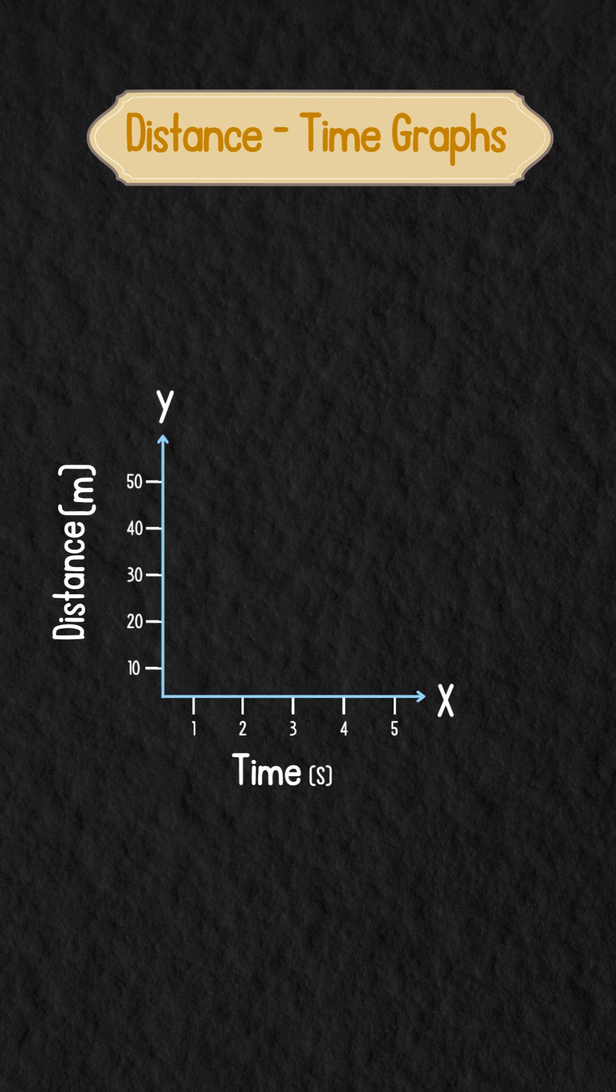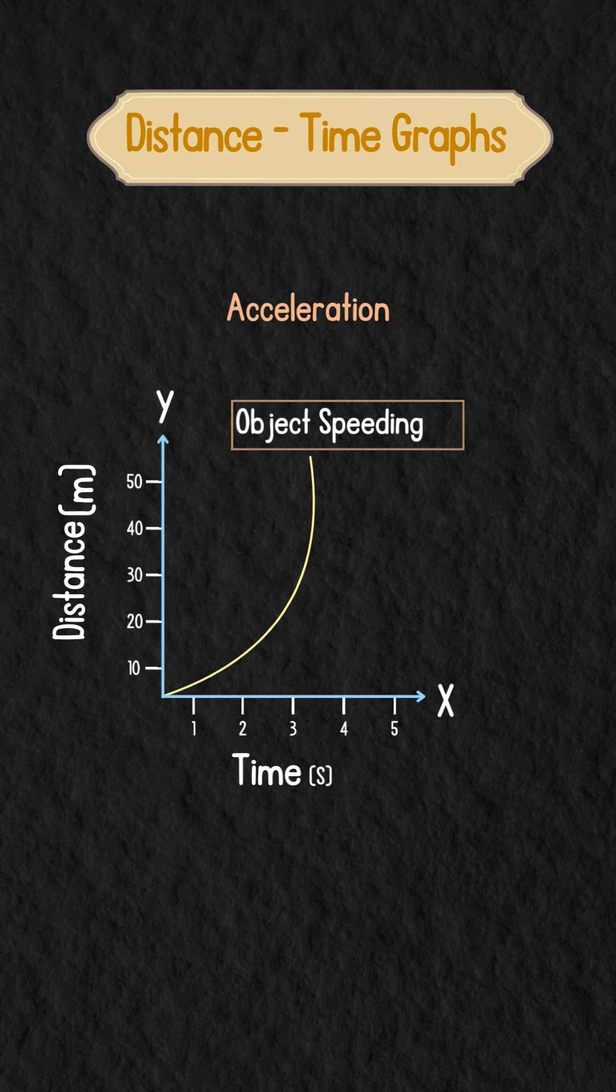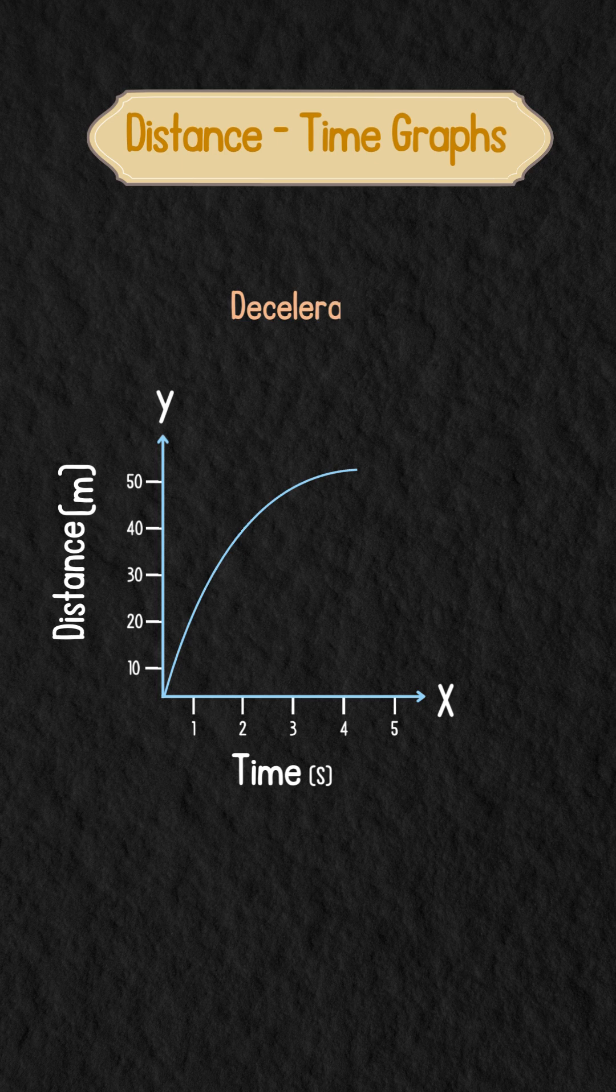Now, if the line curves upward, it shows acceleration, meaning the object is speeding up. On the other hand, a downward curve shows deceleration, meaning the object is slowing down.